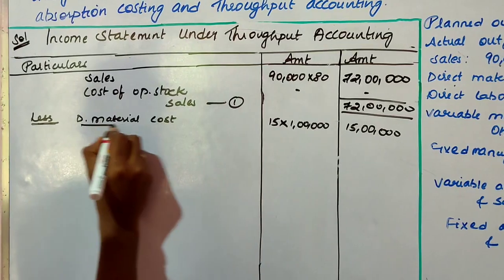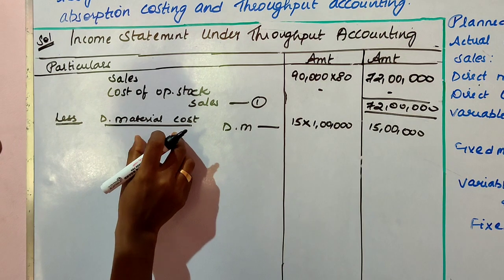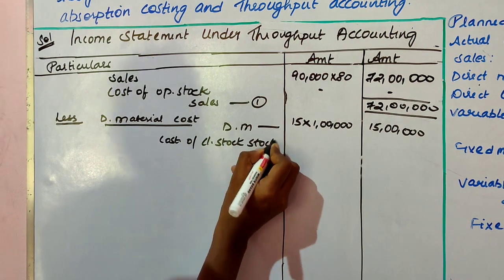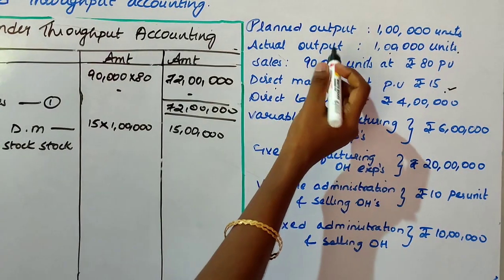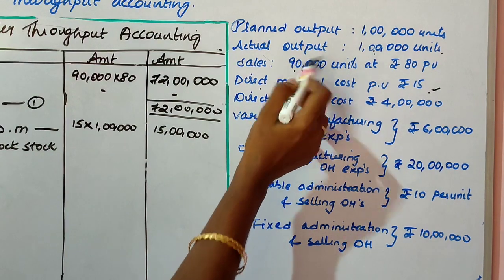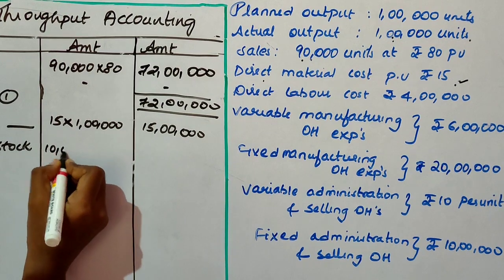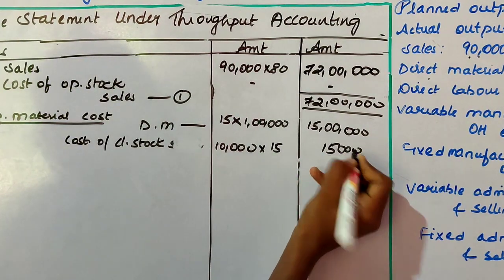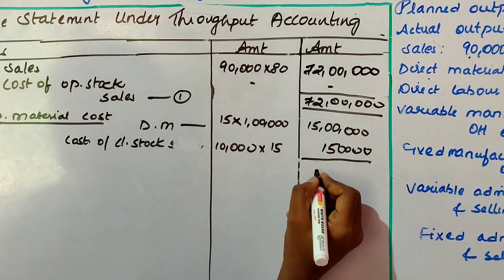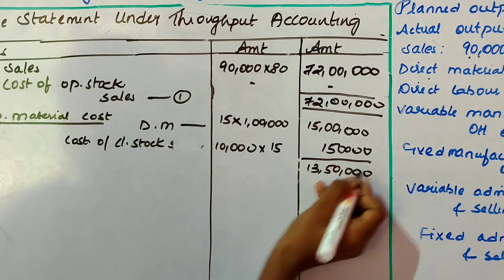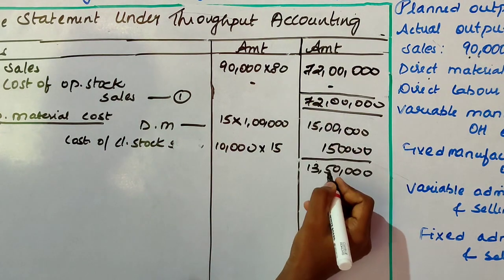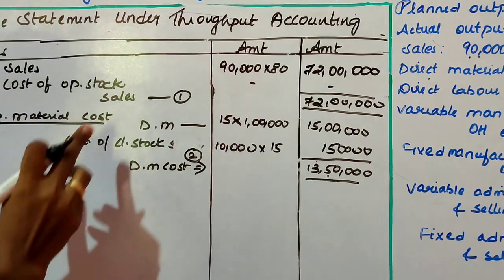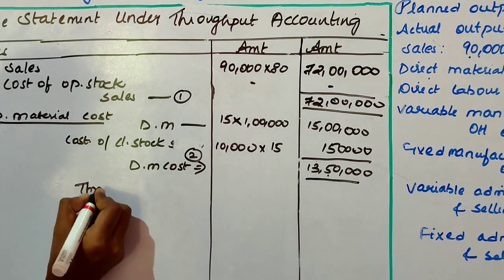To get the direct material cost of goods sold, deduct the cost of closing stock. 10,000 units remain as stock, and material cost is 15 per unit, so closing stock material cost is 1 lakh 50,000. Therefore direct material cost is 15 lakhs minus 1 lakh 50,000 equals 13 lakhs 50,000. From sales if you deduct the direct material cost, you will get throughput contribution.